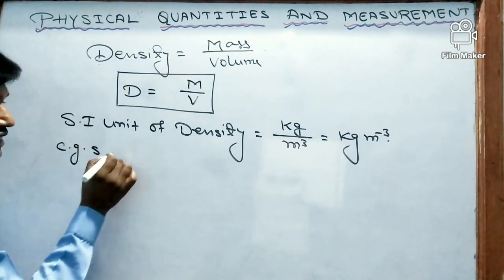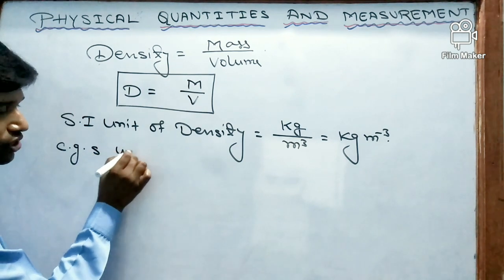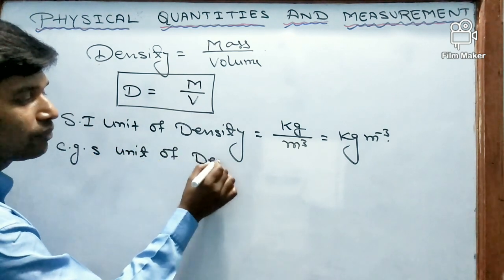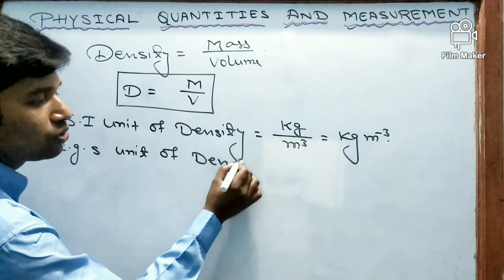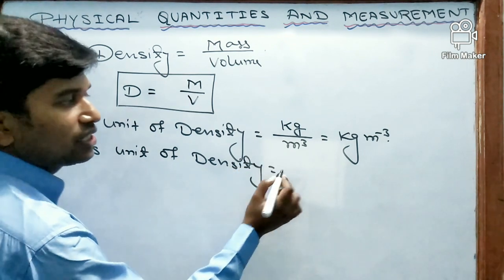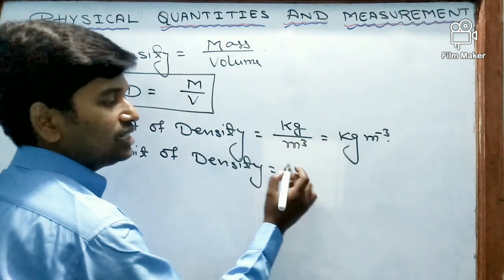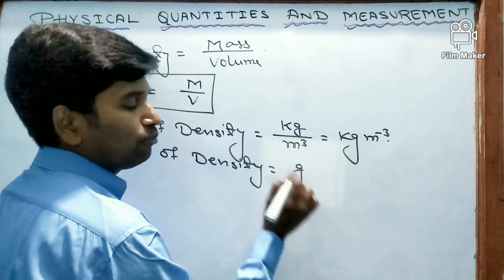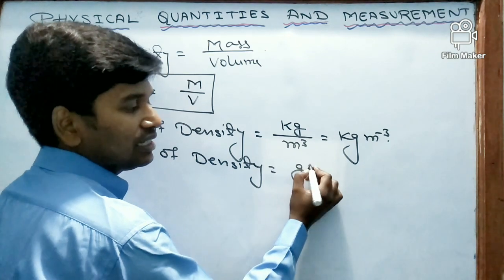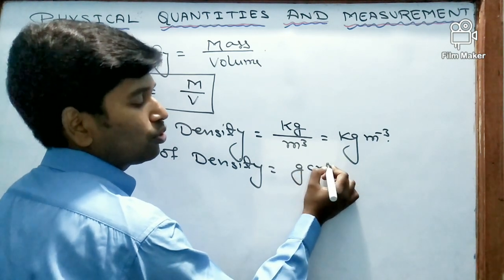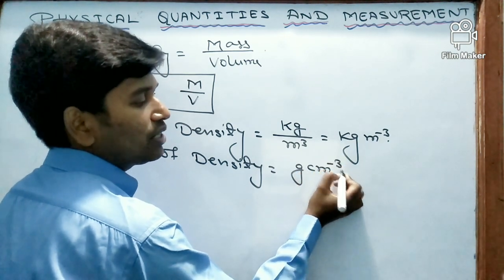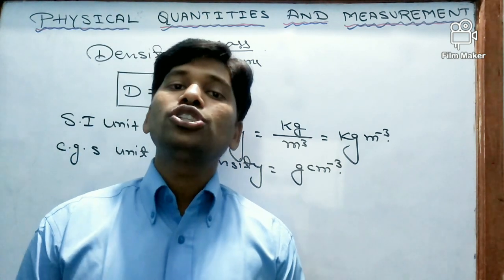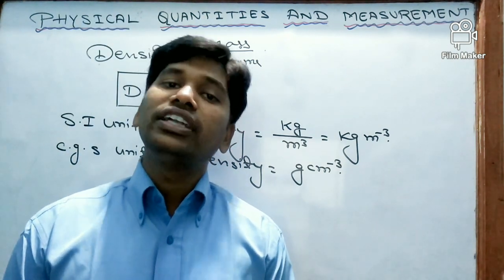Now let us write the CGS unit of density. In CGS, mass is measured in gram and volume is measured in centimeter cube. So gram per centimeter cube is the CGS unit of density.